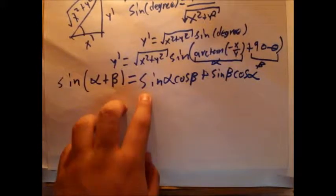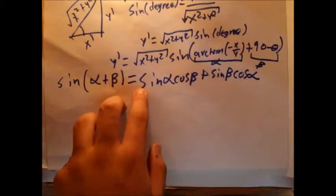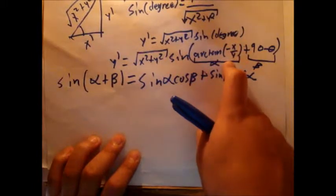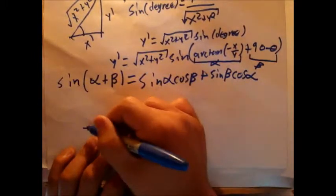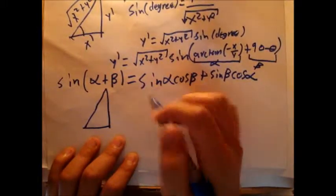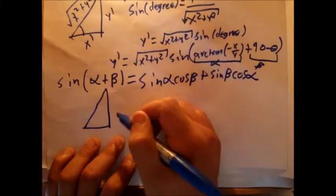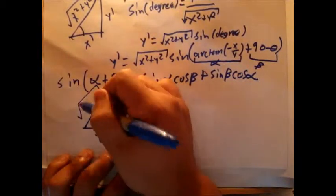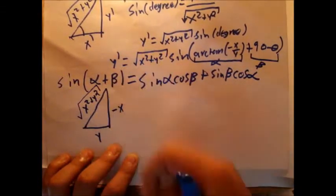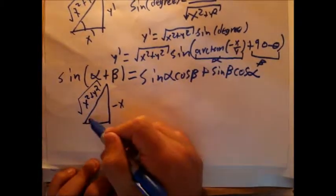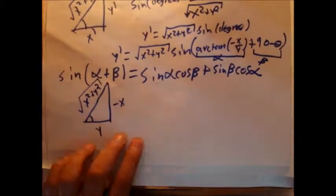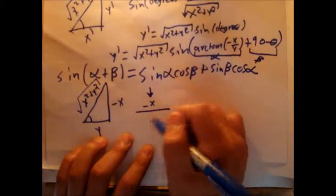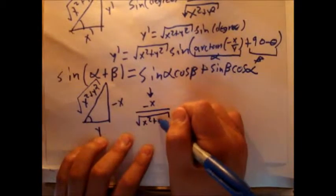If this is alpha, the formula requires sine of alpha — we have to find what sine of arctan(negative x / y) is. Using a representative triangle: the tangent gives us opposite negative x over adjacent y, so the hypotenuse is the square root of x squared plus y squared. Taking sine of this angle — opposite over hypotenuse — gives us negative x over the square root of x squared plus y squared.